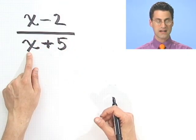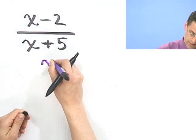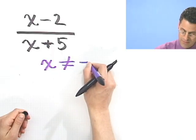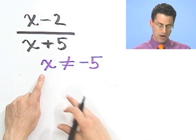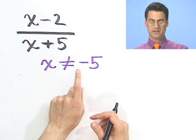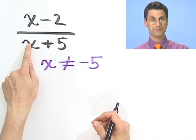So, where is this zero? Well, when x equals minus 5. So, x cannot equal minus 5. So, the domain of this expression would be all the x's except minus 5 because that would make sense. I can't divide by zero.